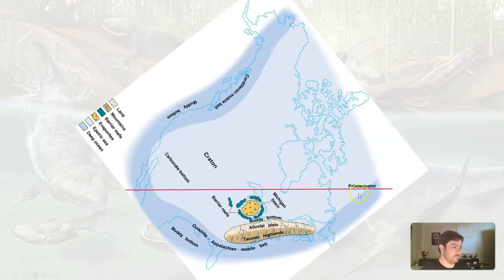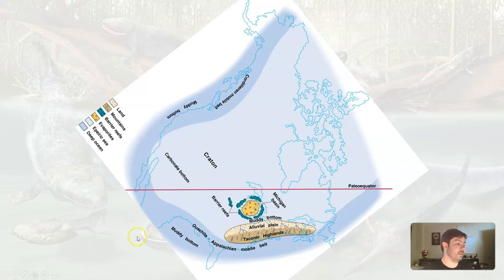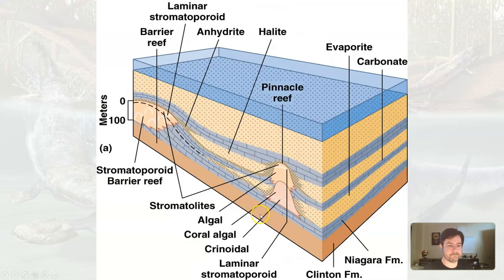North America is still pretty much right along the equator. So we get the Michigan Basin here with a lot of these evaporites. Salt deposits are very common around the Great Lakes. In fact, where I'm from in Cleveland, there are salt mines right around the lake because of what was going on during this time.